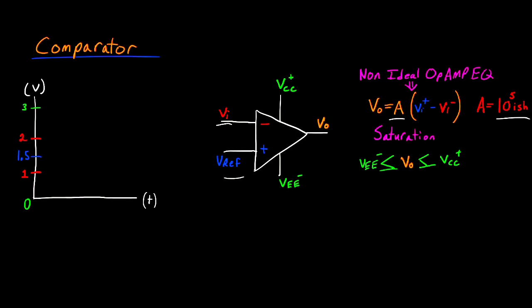The second main idea for the comparator is the idea of saturation. The output voltage, Vout, is bounded between the two power supply inputs, Vcc plus and Vee minus.